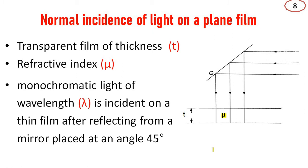A monochromatic light of wavelength lambda is incident on a thin film after reflecting from a mirror placed at an angle of 45 degrees. This is a monochromatic light source — it has a wavelength lambda. It can be a sodium lamp or a different source.